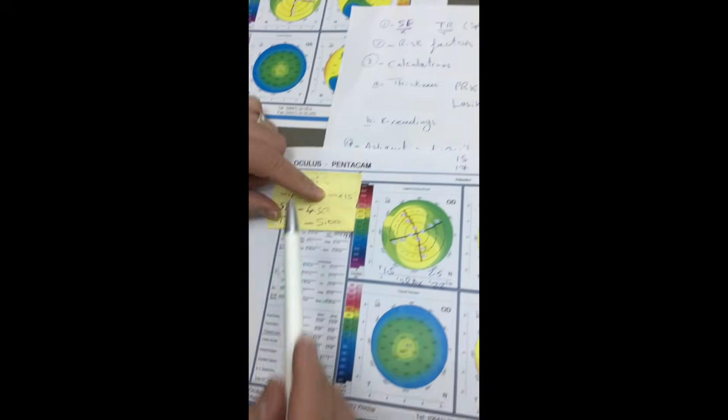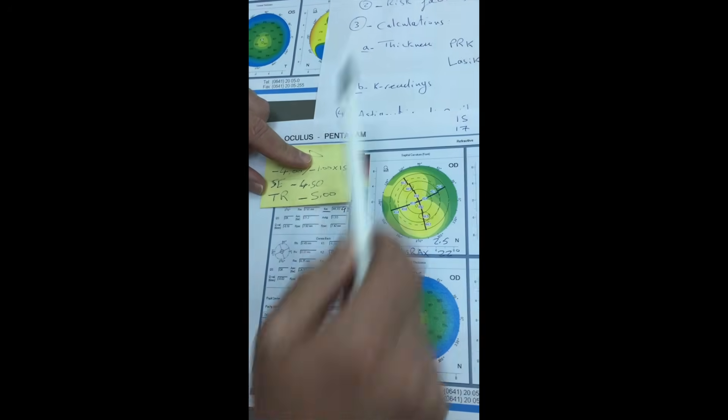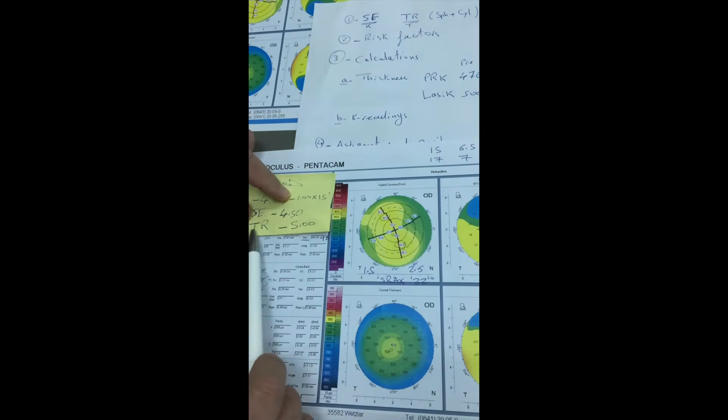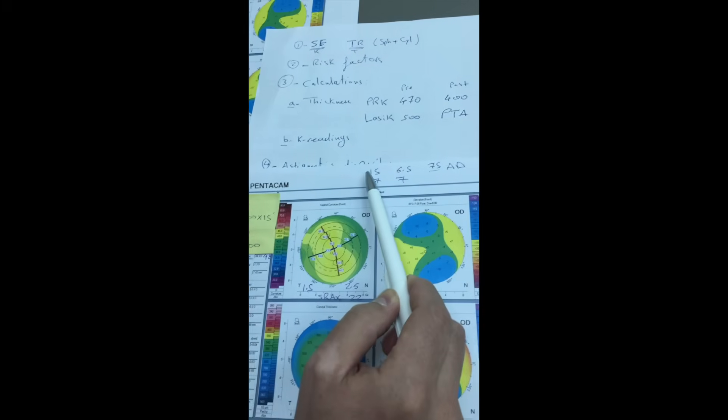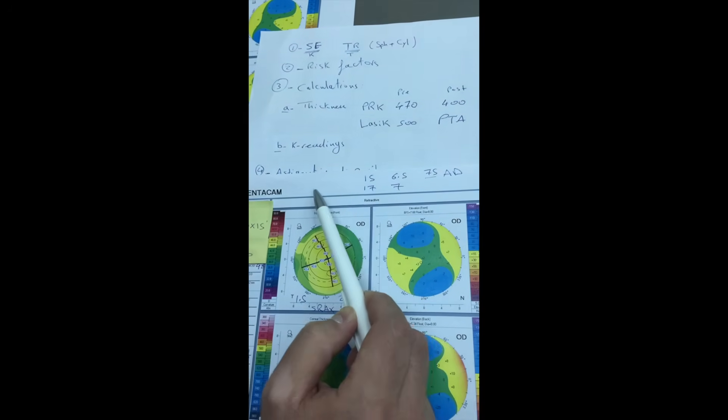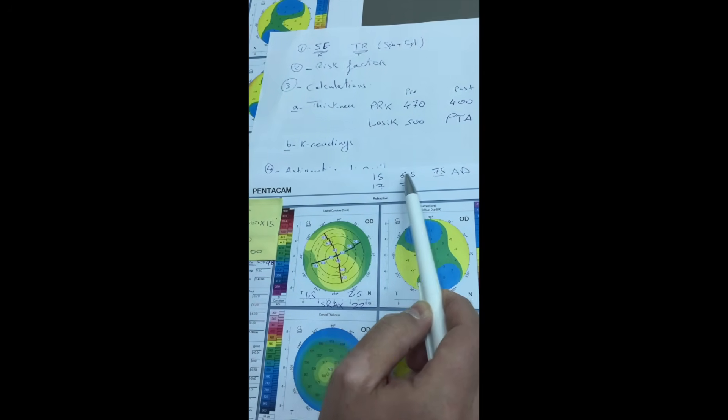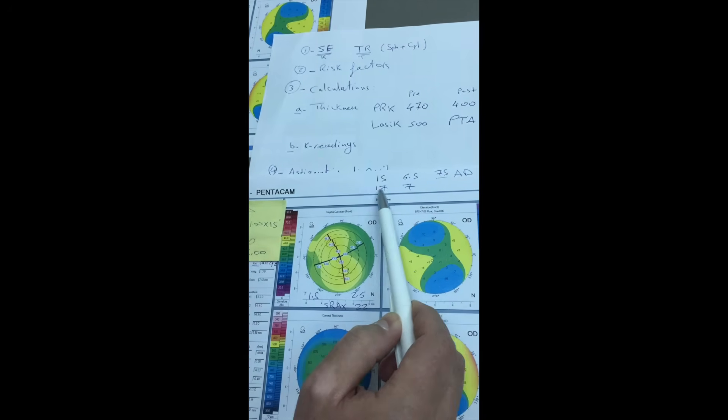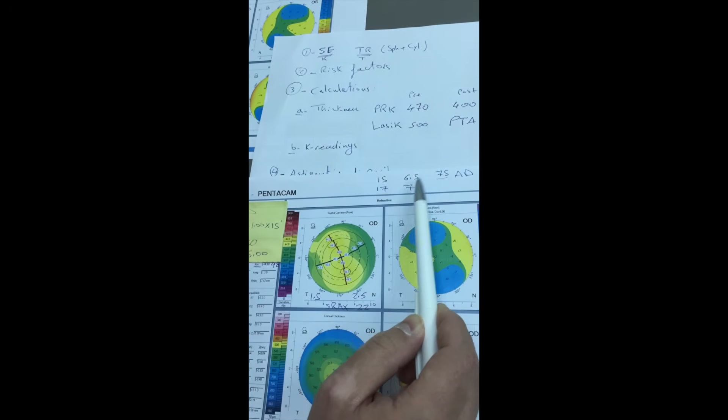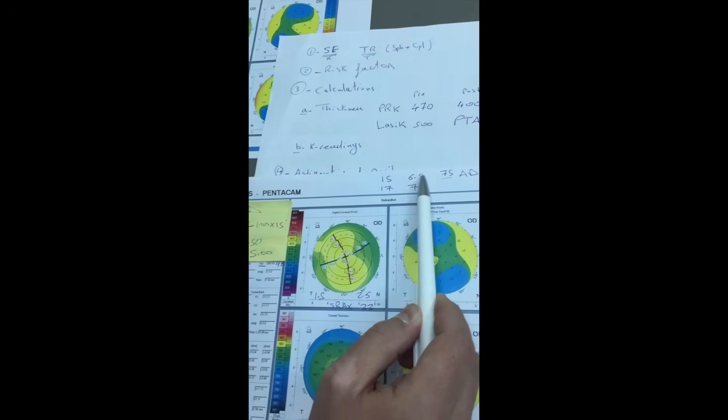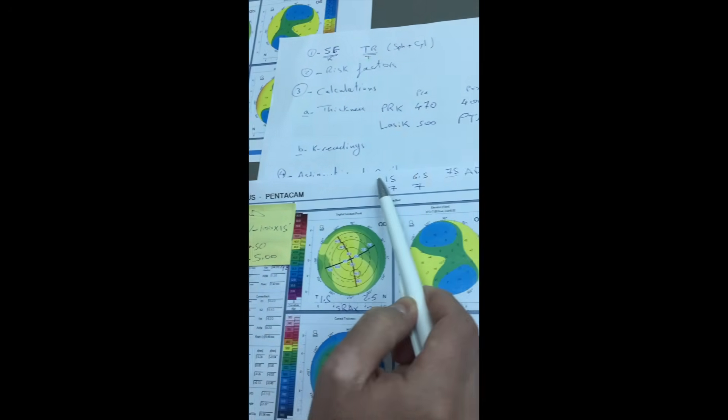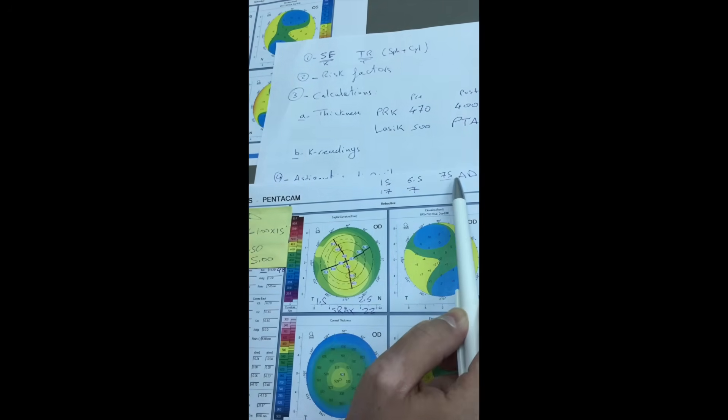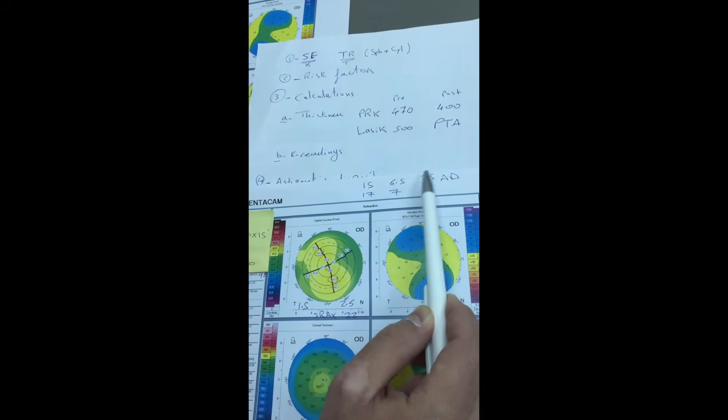Let's have an example. In order to calculate the thickness, we have to depend on the total refraction. The total refraction in this example is minus 5 diopters. Each one diopter of myopic ablation will ablate 15 microns if the optical zone is 6.5 and 17 microns if the zone is 7. Let's assume that the zone is 6.5 millimeters, then we will multiply the five diopters by the 15 microns. So the ablation depth will be 75 microns.